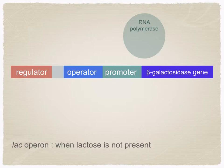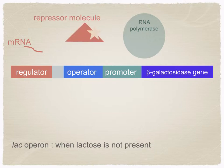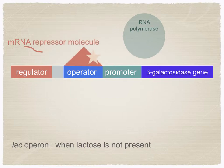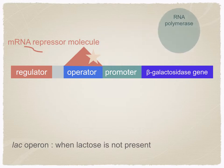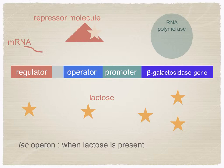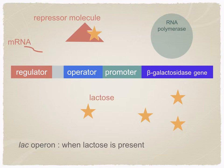So how does all this work? The regulator gets transcribed into messenger RNA, which is then translated into a repressor molecule. This will bind to the operator and prevent RNA polymerase from binding to the promoter and transcribing the gene. If this was the lac operon, all this would occur if there's no lactose present, so the beta-galactosidase gene will not be transcribed. If lactose is present, the lactose molecules will bind to the repressor molecule and change its shape so that it cannot bind to the operator, meaning RNA polymerase can now bind to the promoter and start to transcribe the gene.